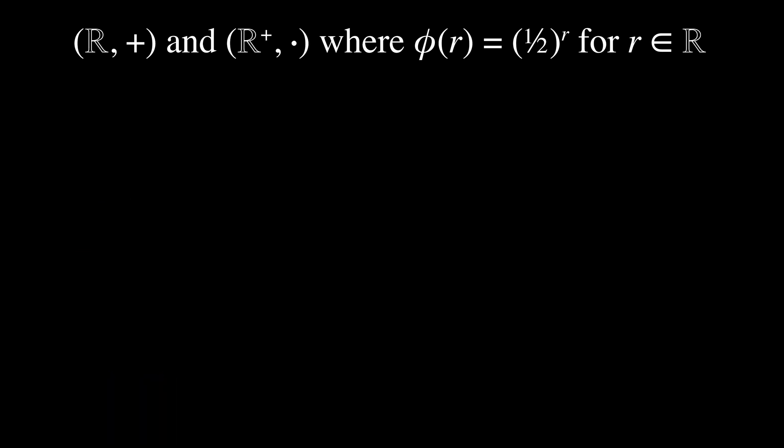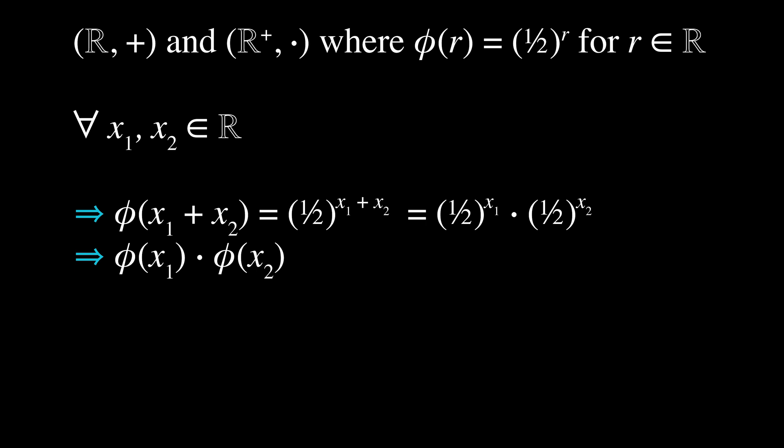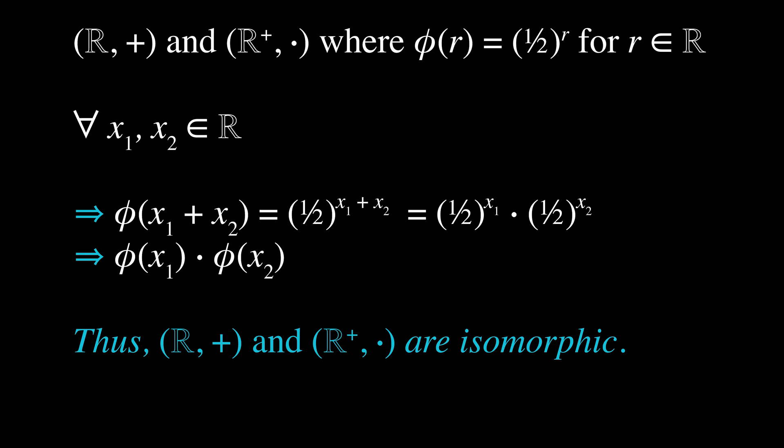Finally, we need to show that the homomorphic property holds. Suppose for all x₁, x₂ in ℝ, φ(x₁ + x₂) = (1/2)^(x₁ + x₂) = (1/2)^x₁ · (1/2)^x₂ = φ(x₁) · φ(x₂). Thus we have shown that the homomorphic property holds, and therefore the two structures (ℝ, +) and (ℝ⁺, ·) are isomorphic.